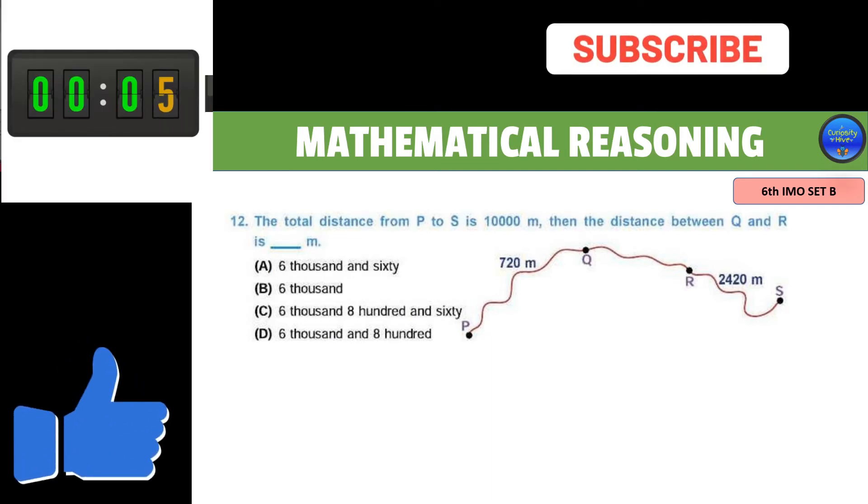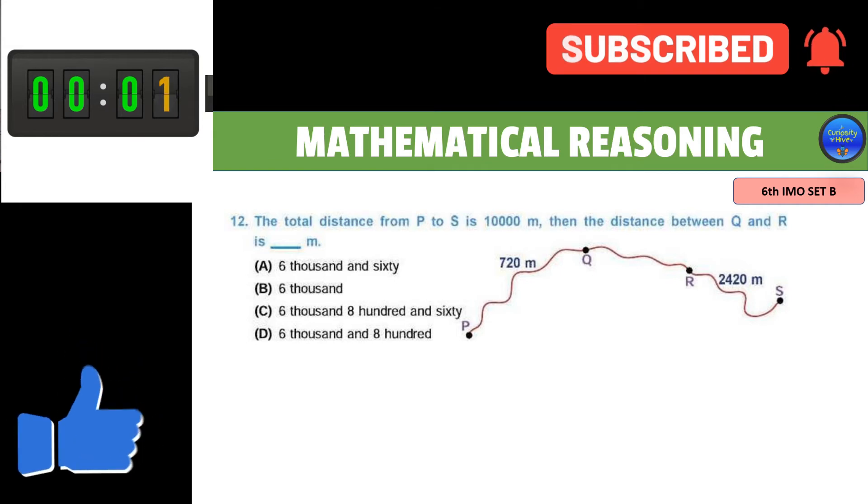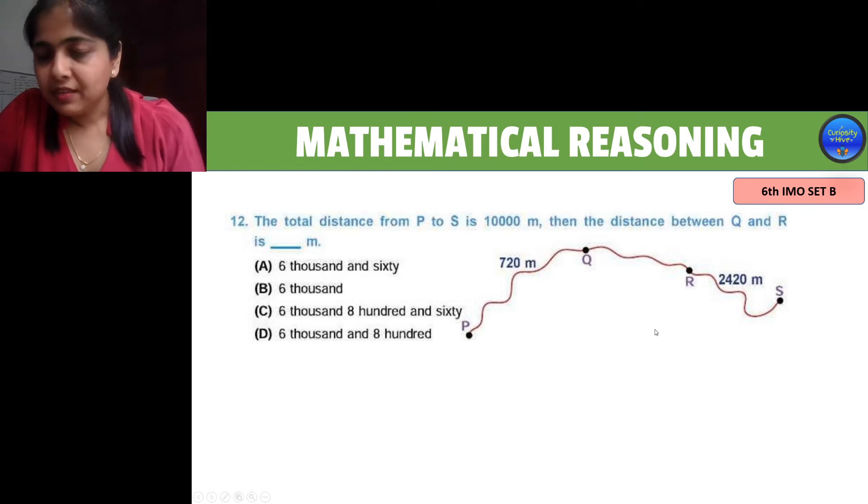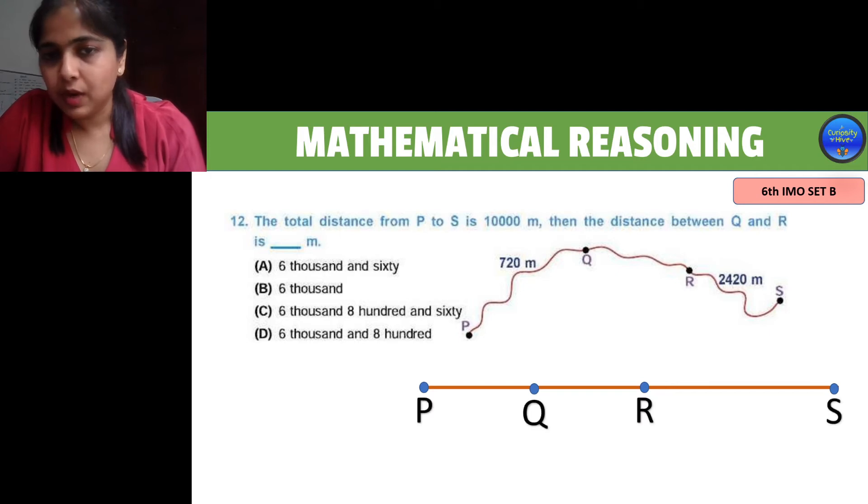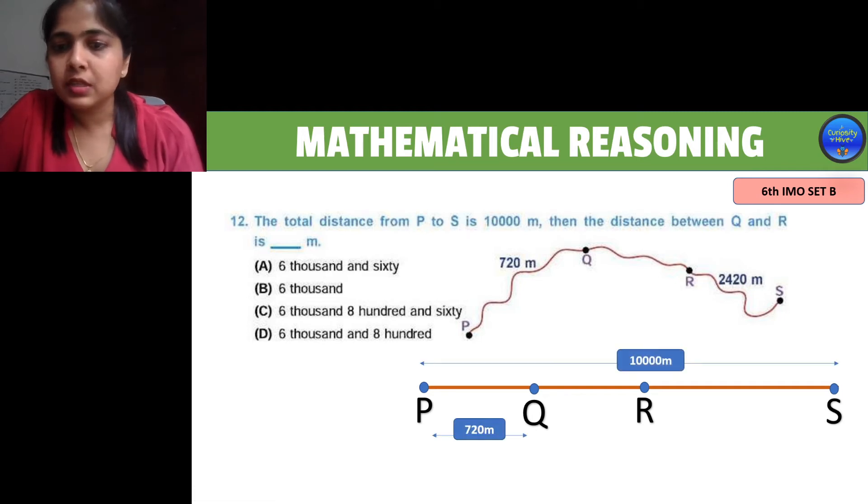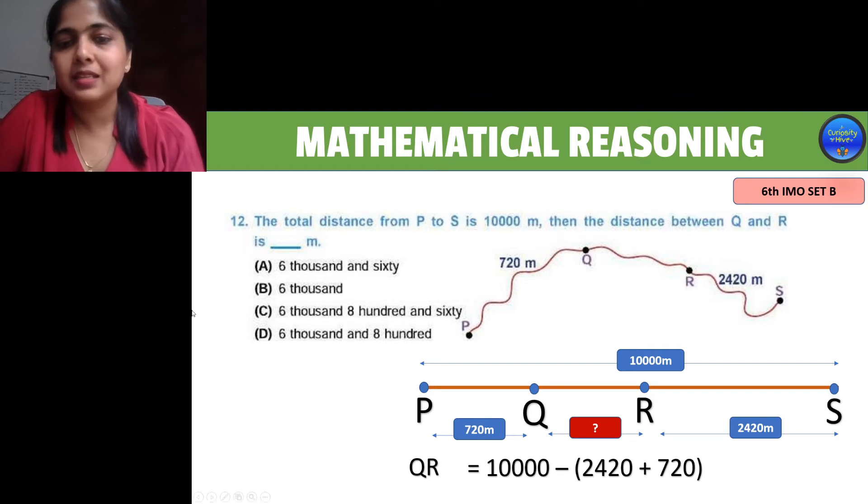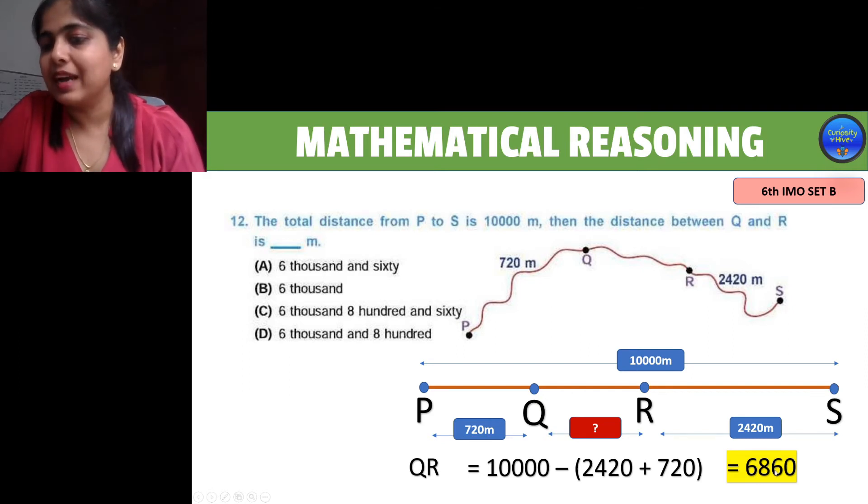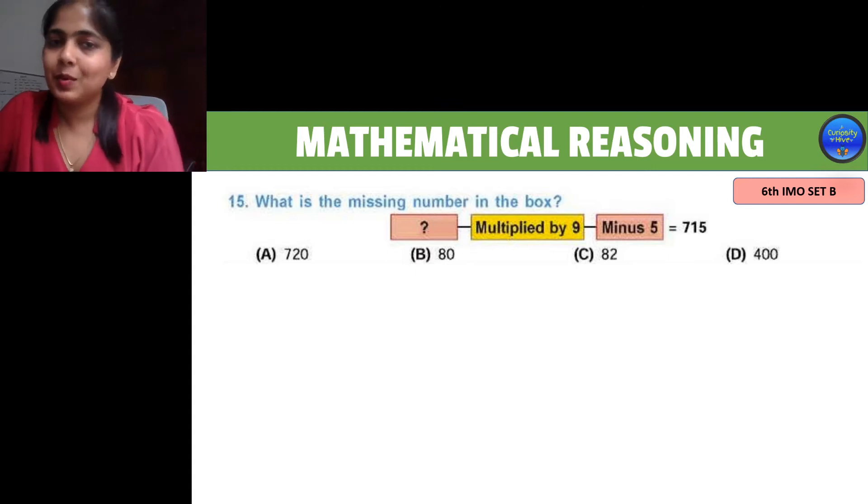Don't get confused with the curvy lines. Just plot a straight line and mark the four points P, Q, R, S, then match up to the numbers given: P to S is 10,000, P to Q is 720, Q to R is unknown, and R to S is 2420 meters. The distance Q to R is 10,000 minus the sum of P to Q (720) and R to S (2420). When you solve this equation, you get 6860, which is option C.